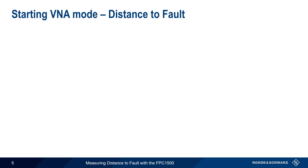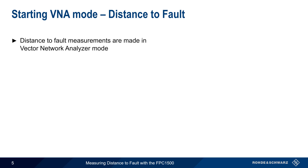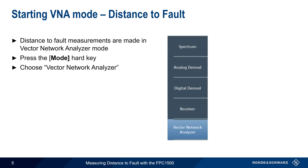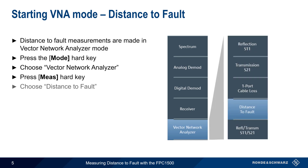Distance to fault measurements on the FPC-1500 are made in Vector Network Analyzer mode. To enter this mode, press the Mode hard key on the front of the FPC, and then choose Vector Network Analyzer. Next, press the Measure hard key and choose Distance to Fault in order to start the distance to fault measurements.